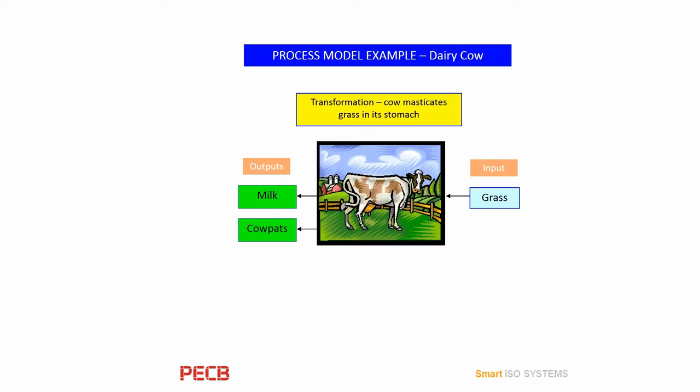The process model example I'm going to use — everybody understands about cows and it's simple to understand. We can see the cow eats grass, the transformation is the cow masticates the grass in its stomach, and then we've got two outputs. The main output is the milk, and — usually somebody starts laughing — that's right, the other output is cow dung. So we're talking about how efficient and how effective your quality management system is.